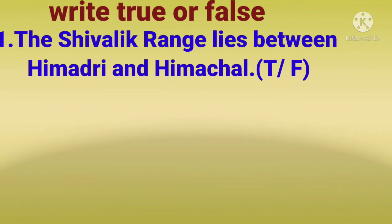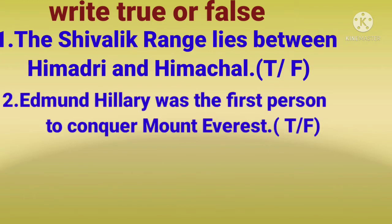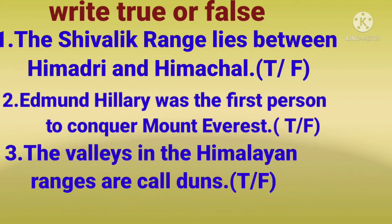Children, first we will see true or false. First one is: the Shivalik range lies between Himadri and Himachal. Second one: Edmund Hillary was the first person to conquer Mount Everest. Third one: the valleys in the Himalayan ranges are called Duns.